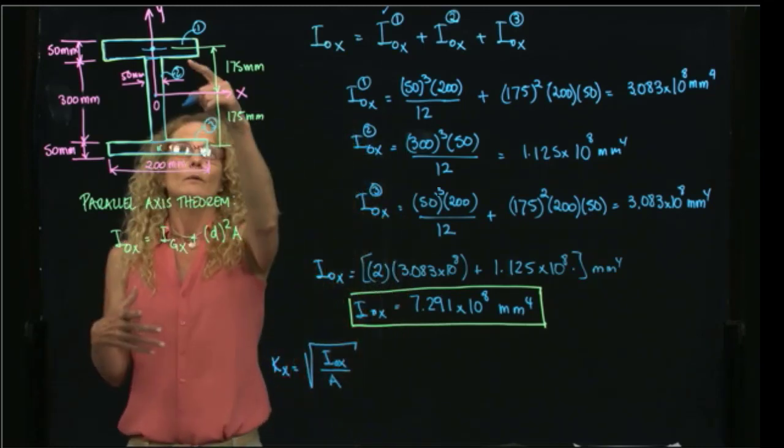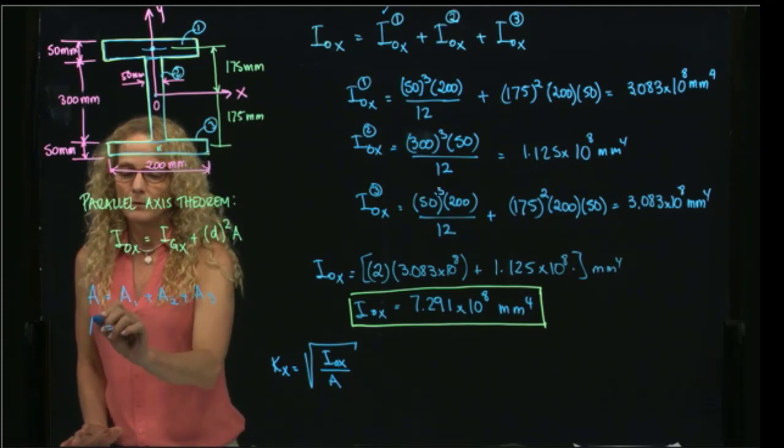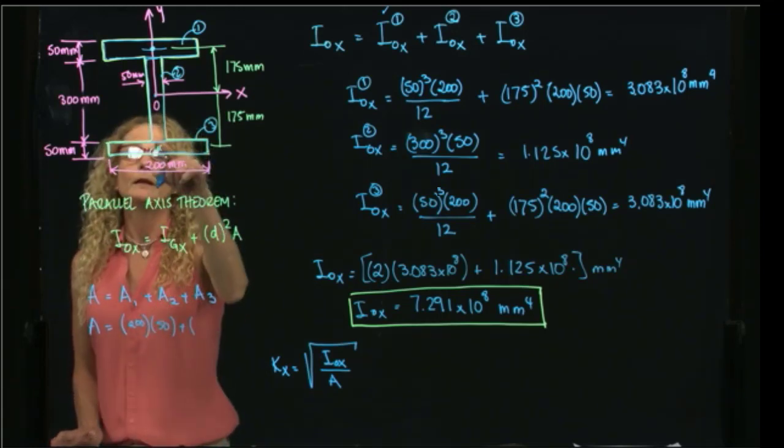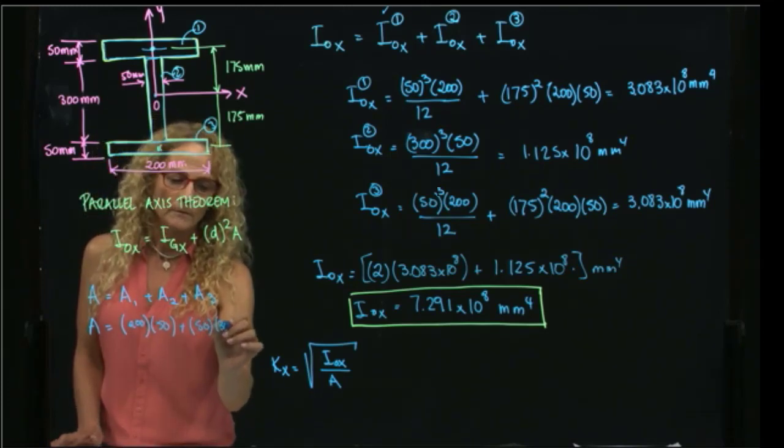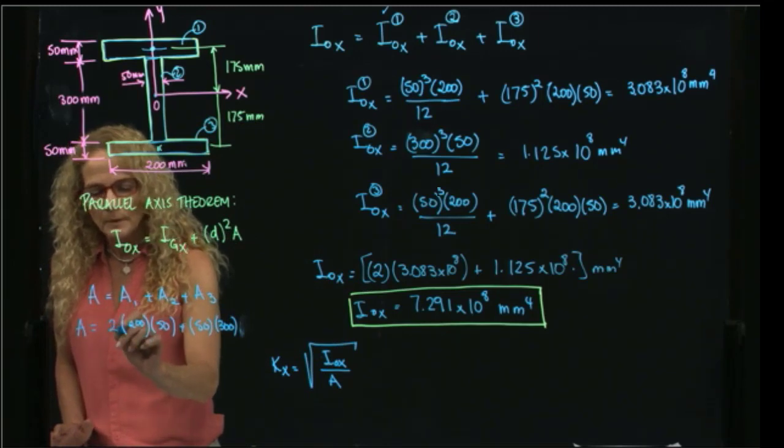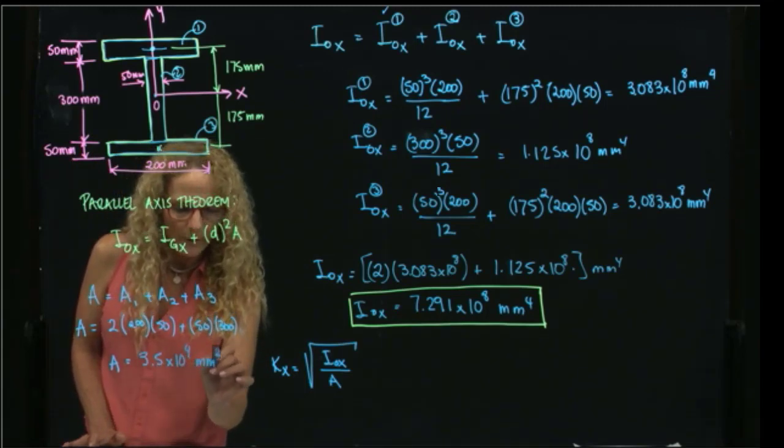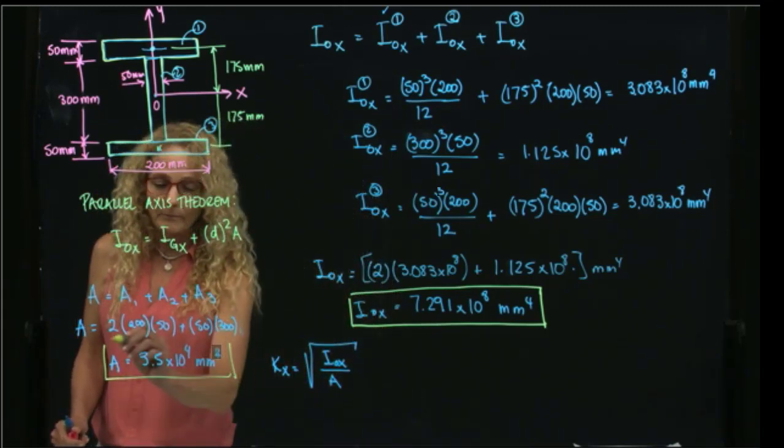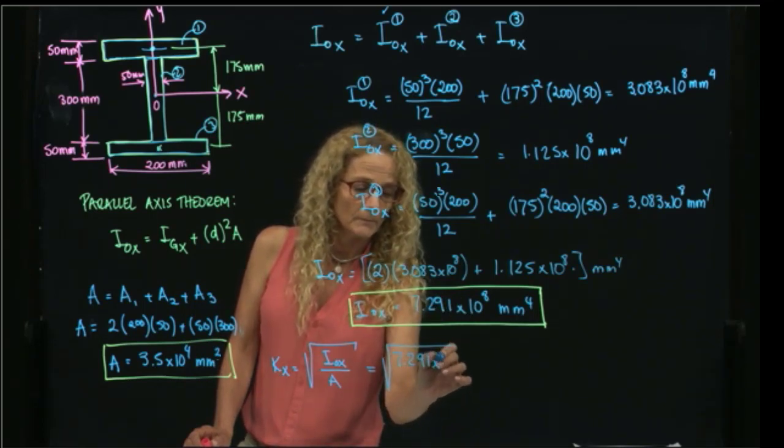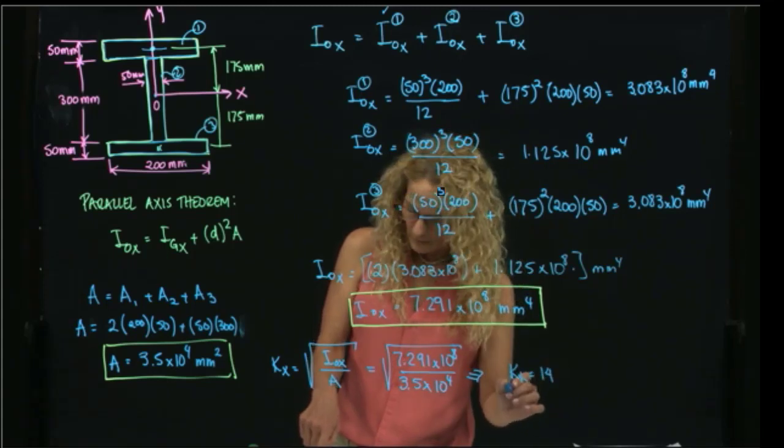The area of the figure will be area 1 plus area 2 plus area 3. And that will be, of course we already calculated the area, right? So the area 1 will be 200 times 50, the area 2 will be 50 times 300. Well, we can actually multiply this one by 2 because it's exactly the same. And the total area gives me a value of 3.5 times 10 to the fourth millimeters squared. So now that I have the area and I have the area moment of inertia, I can calculate the radius of gyration, which will be then the square root of this value over here divided by the area that I just calculated. And the value is 144 millimeters.